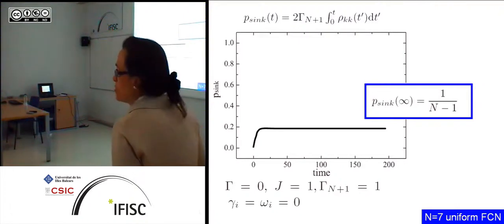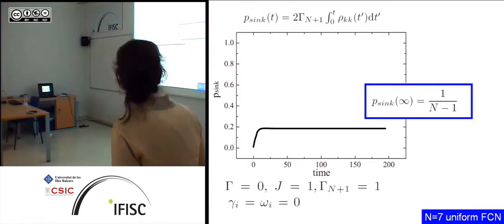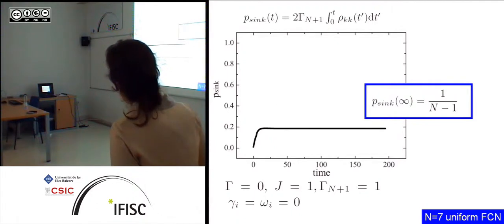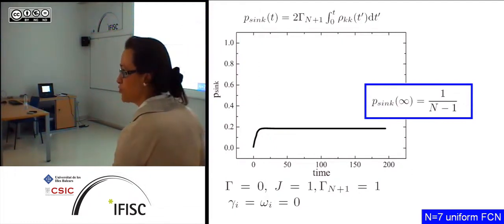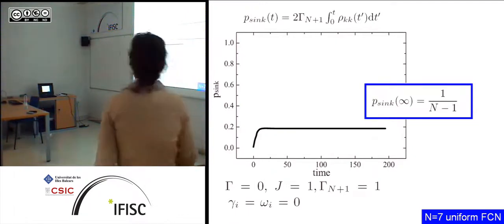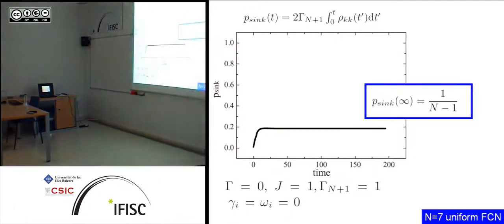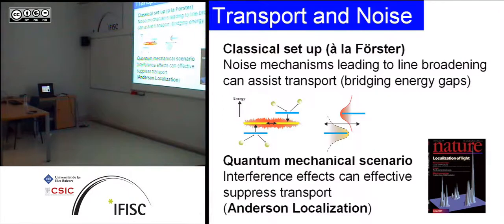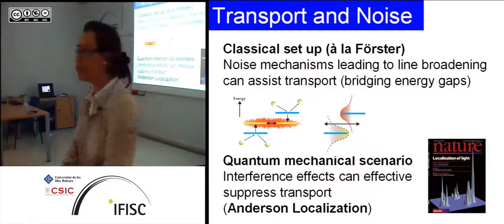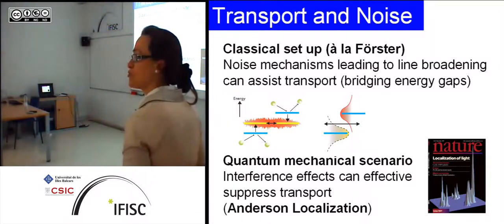If you allow all coupling strengths to be the same, then we can do things analytically and give an expression for the asymptotic rate of population transfer to the site. You see that it is extremely inefficient with the number of sites. For something as moderate as seven sites, the probability that the excitation has reached the trapping site is only 16.6%. So if the Hamiltonian alone is dictating the dynamics — if the evolution is fully coherent — then sending excitations through a network like this would be very bad for any type of transport.